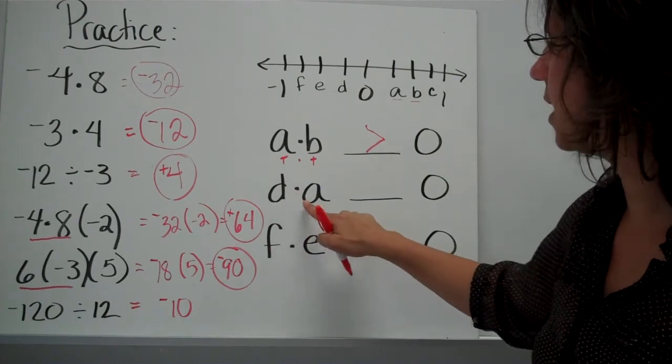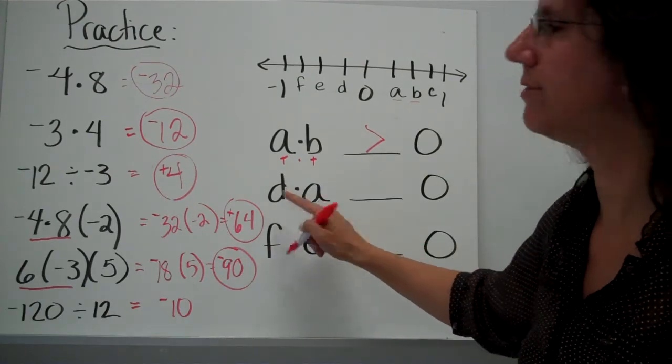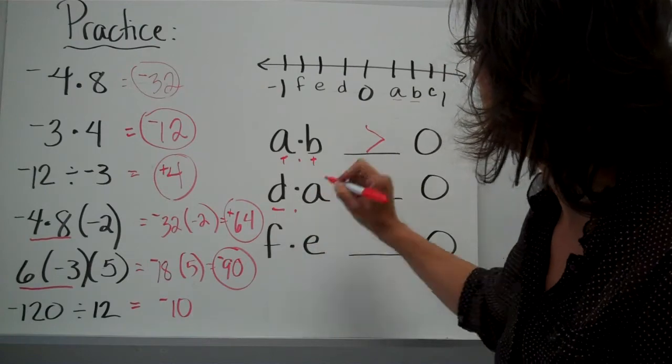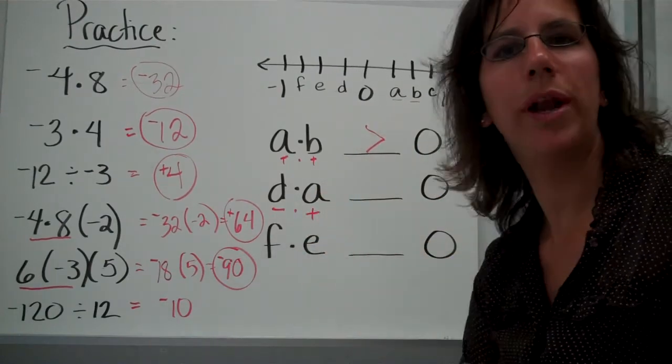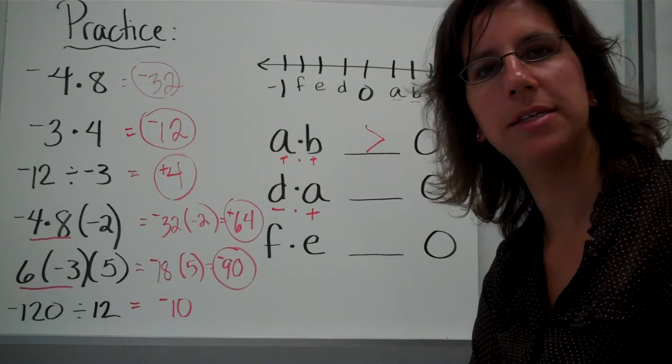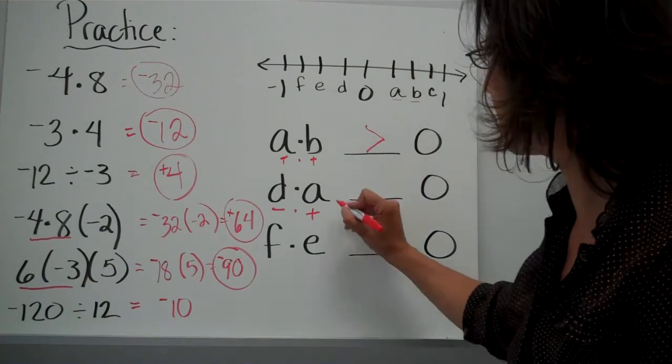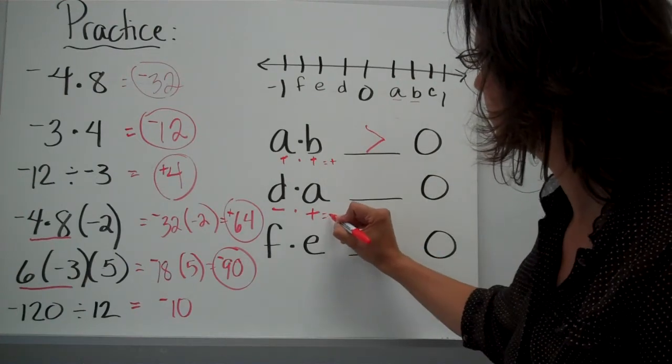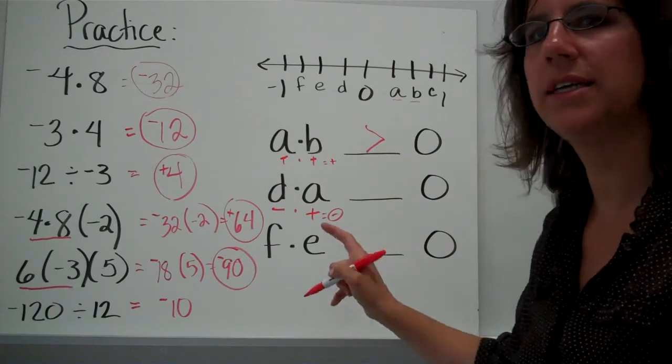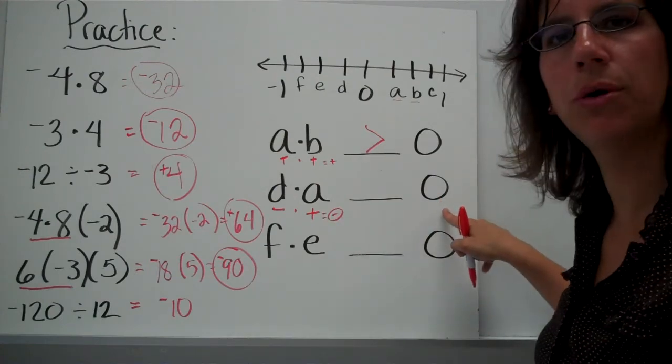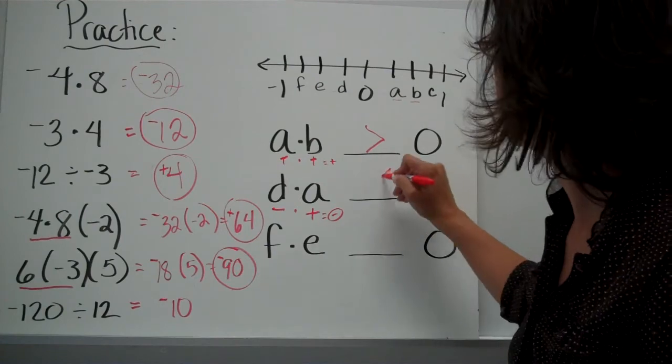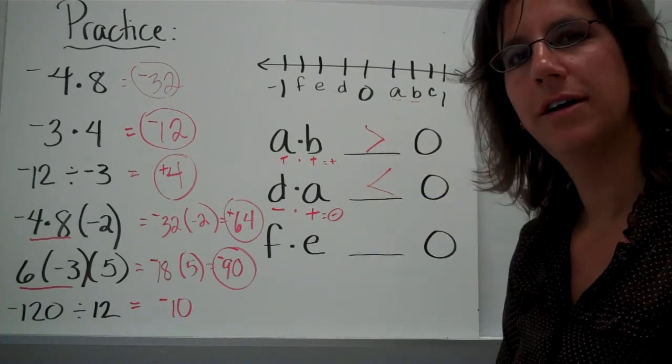How about D times A? D is a negative number. A is a positive number. What happens when you multiply a negative times a positive? You get a negative answer. So is a negative answer going to be smaller or bigger or equal to 0? Smaller, right?